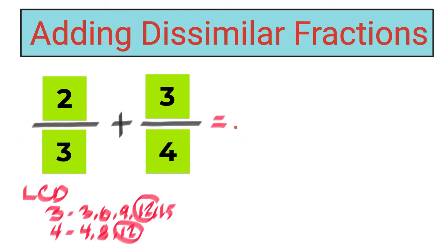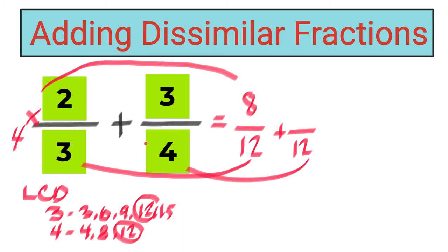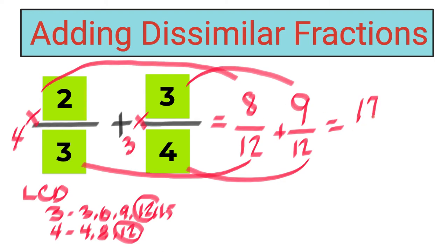Instead of using three and four, we will use twelve as the denominator. Now we need to get the new numerators. Twelve divided by three gives you four, then four times the numerator two gives you eight. Twelve divided by four gives you three, then three times three gives you nine. Now you can simply add: eight plus nine gives you seventeen. Copy the denominator, which is twelve. Now take a look — is our answer final?